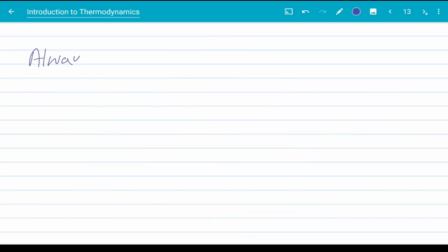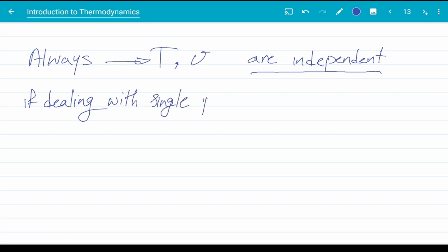Two properties that can always be used with this postulate are temperature and specific volume. Please take note, not volume, but specific volume. They are always independent. Another useful set of properties is temperature and pressure. However, we need to be careful. Temperature and pressure are independent when dealing with single phase states, like when we are dealing with water or ice or steam or gas, single phase.